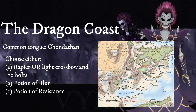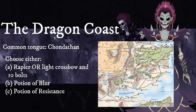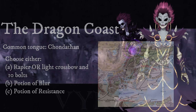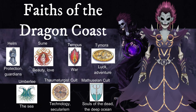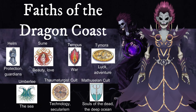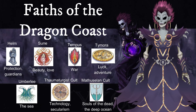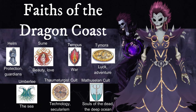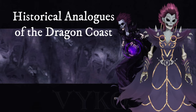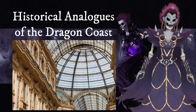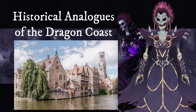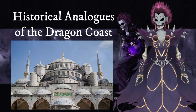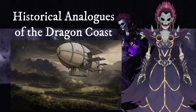The available equipment packages reflect the criminal and mercantile roots of the Dragon Coast. They may take a weapon — either a rapier or a light crossbow and bolts — or alternatively choose between two protective potions: a potion of blur or a potion of resistance. The major faiths are Helm, Sune, Tempus, Tymora, and Umberlee. It is also home to the heretical Thaumaturgist cult masquerading as followers of Gond, and the Methuselan cult of Marseilla, popular among sailors. The historical analogues have echoes in the Italian city-states, especially Venice, mixed with the exotic appeal of Constantinople — though a visitor to Westgate might well feel they were in Atlantis itself.